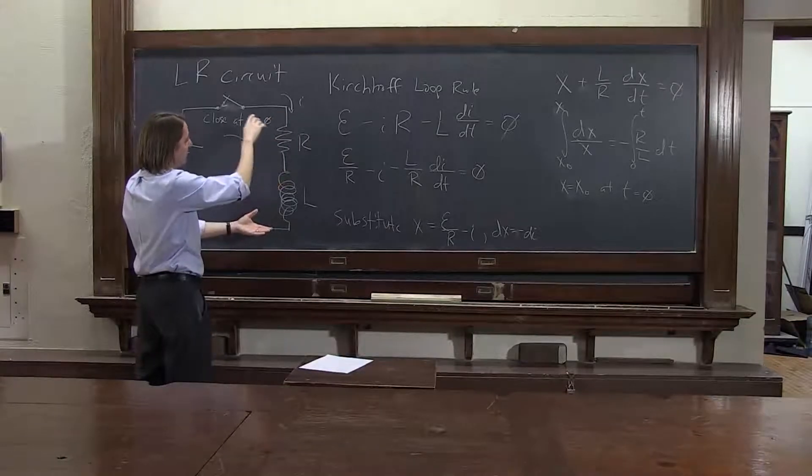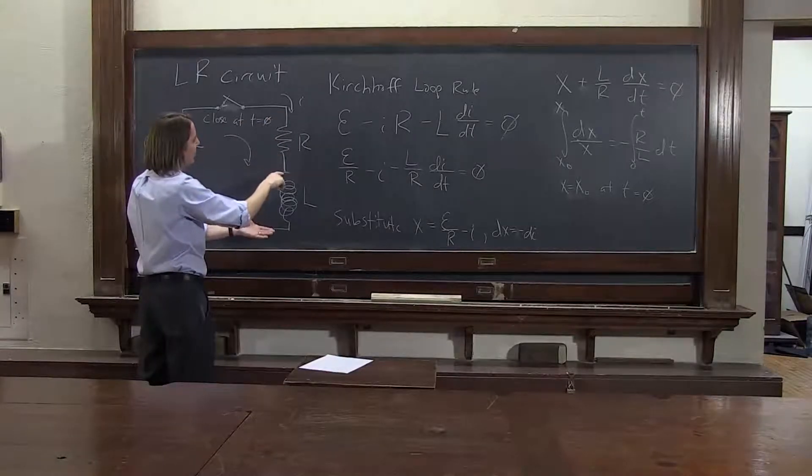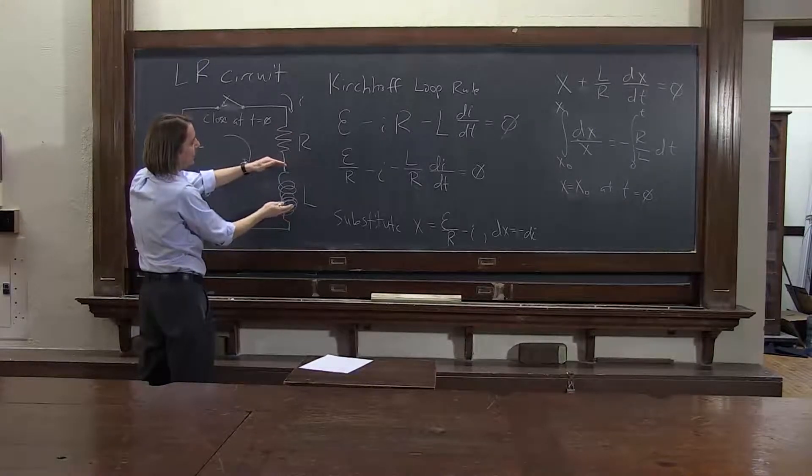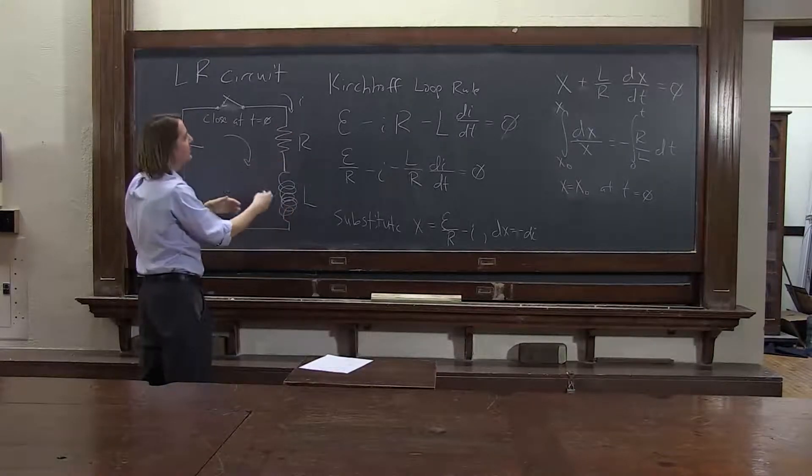And then, as the current builds, you start to get some of your drop here, and you start to build up a magnetic field here, and it slows down, doesn't change as much. And when you reach steady state, you have a constant current,